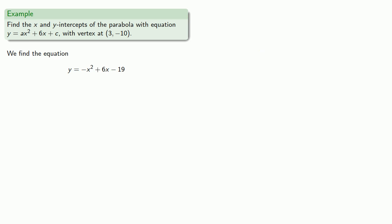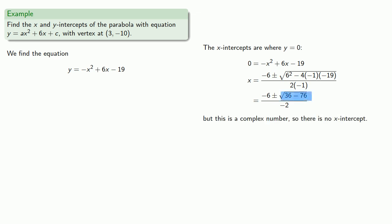Now remember the x-intercepts are where y = 0. So if y = 0, we get the equation 0 = -x² + 6x - 19. Pick your favorite method of solving this. How about the quadratic formula? And we see that we get a complex number as a solution. So there is no x-intercept.